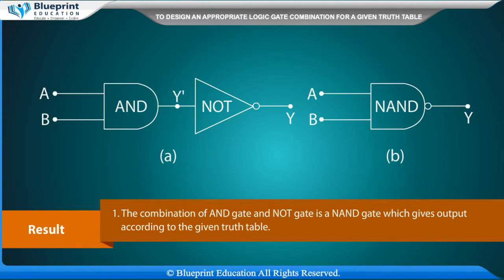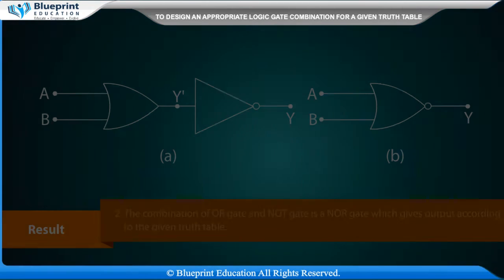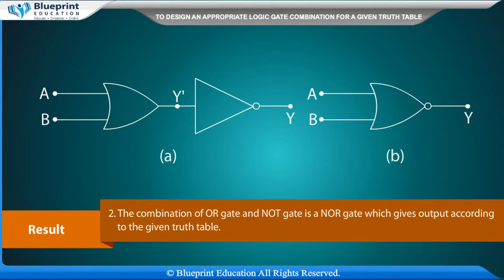Result: The combination of AND gate and NOT gate is a NAND gate, which gives output according to the given truth table. The combination of OR gate and NOT gate is a NOR gate, which gives output according to the given truth table.